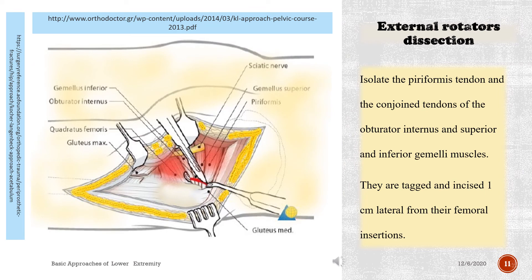External rotators dissection: isolate the piriformis tendon and the conjoined tendons of the obturator internus and superior and inferior gemelli muscles. They are tagged and incised one centimeter lateral from their femoral insertions.